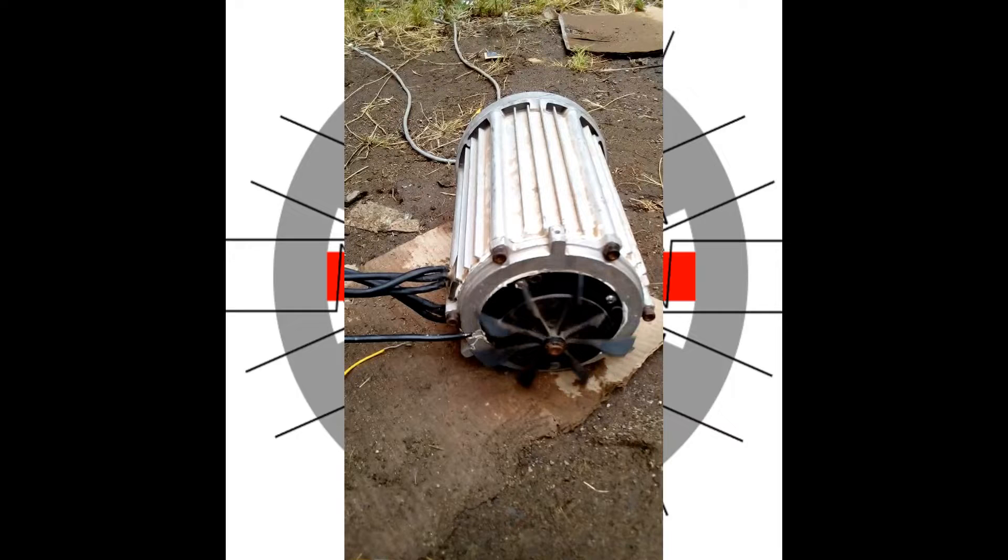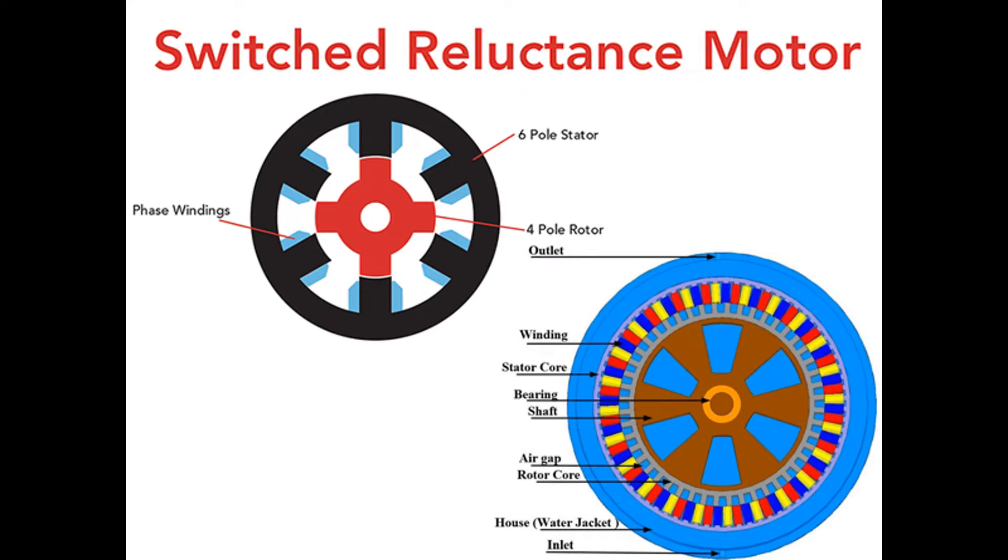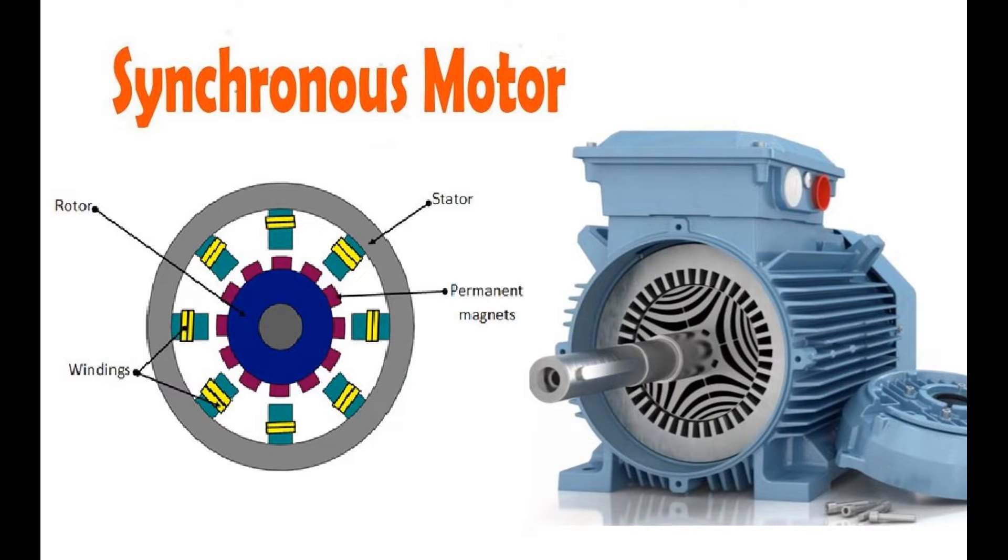Types of reluctance motor. There are two types of reluctance motors: switched reluctance motors and synchronous reluctance motors. The difference between switched reluctance motors and synchronous reluctance motors is that switched reluctance motors have concentrated windings, while synchronous reluctance motors have distributed windings.